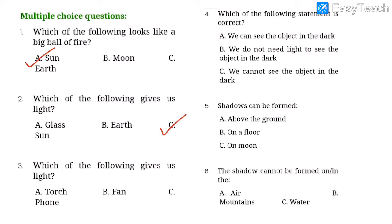Number three: which of the following gives us light — torch, fan, or phone? We know that a torch is specially made for giving us light. A phone has a flashlight but is made for a different purpose, while a torch's purpose is to give us light. So the answer to number three is torch.